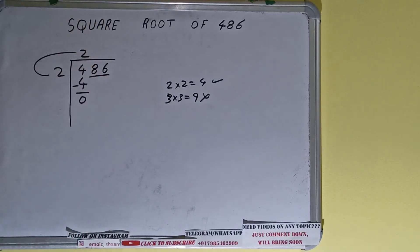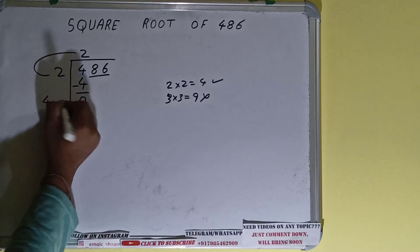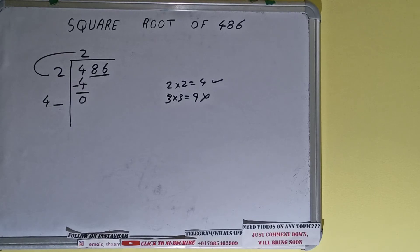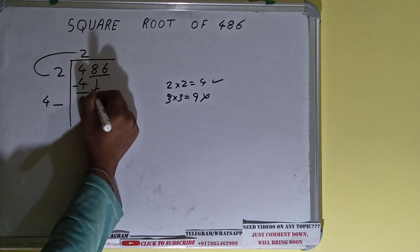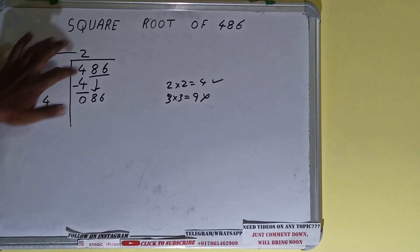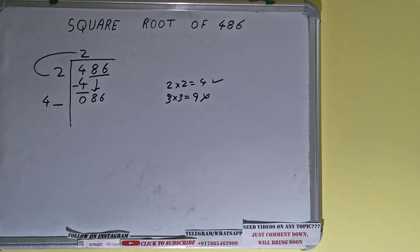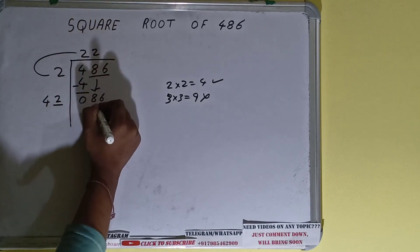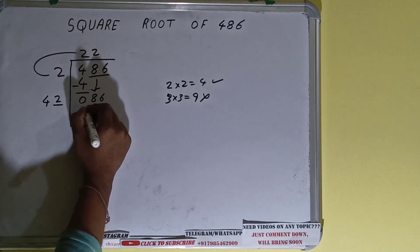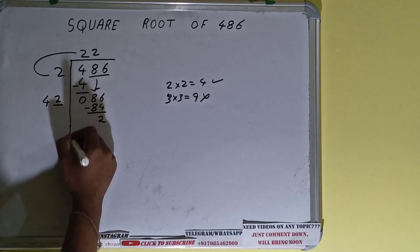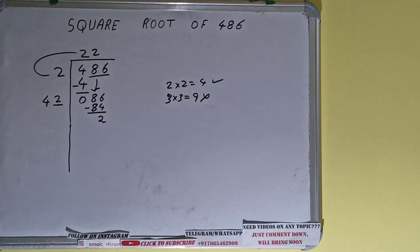Now two into two — so two plus two is four — and keep one digit extra. This number we need to make it big so that we can divide. Bring the next pair down and it will become 86. Whatever number we write here we have to write here also. If we write two here and two here it gives 84. Subtract it and two will be left.